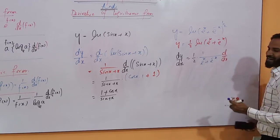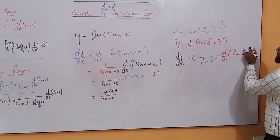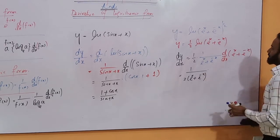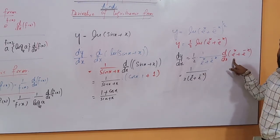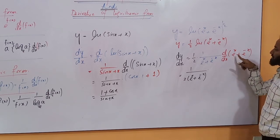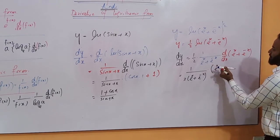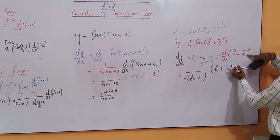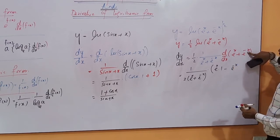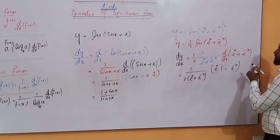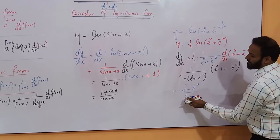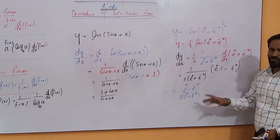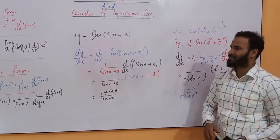Multiplied by the derivative of (e^x + e^(-x)). The derivative of e^x is e^x (exponent x, derivative 1), and the derivative of e^(-x) is e^(-x) times (−1), giving minus e^(-x). So the final answer is (e^x − e^(-x)) divided by (e^x + e^(-x)), all divided by 2. You can also convert this to hyperbolic form, which I will cover in my next lecture.